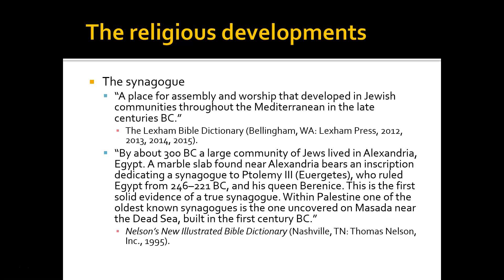Also during this period, the synagogue came into being — a place for assembly and worship that developed in Jewish communities throughout the Mediterranean in the late centuries before Christ. By about 300 BC, a large community of Jews lived in Alexandria, Egypt. A marble slab found near Alexandria bears an inscription dedicating a synagogue to Ptolemy III, who ruled Egypt from 246 to 220 BC, and his queen Berenice — this is the first solid evidence of a true synagogue. Within Palestine, one of the oldest known synagogues is the one uncovered on Masada, near the Dead Sea, built in the first century.